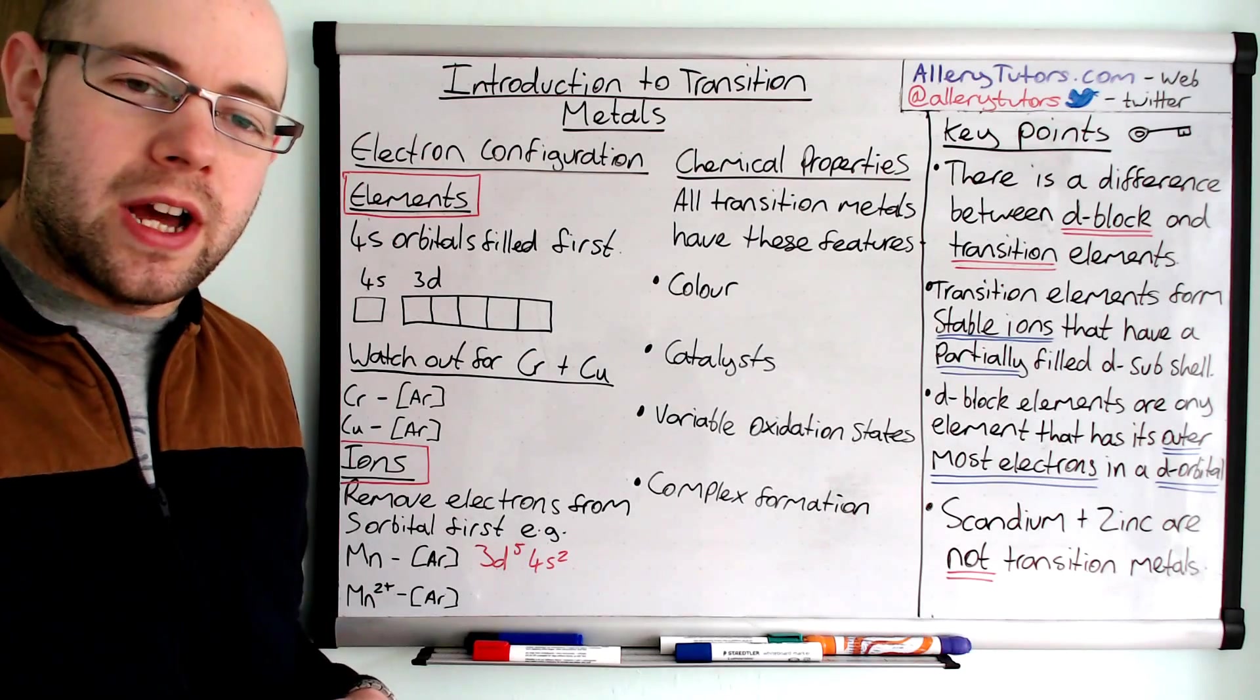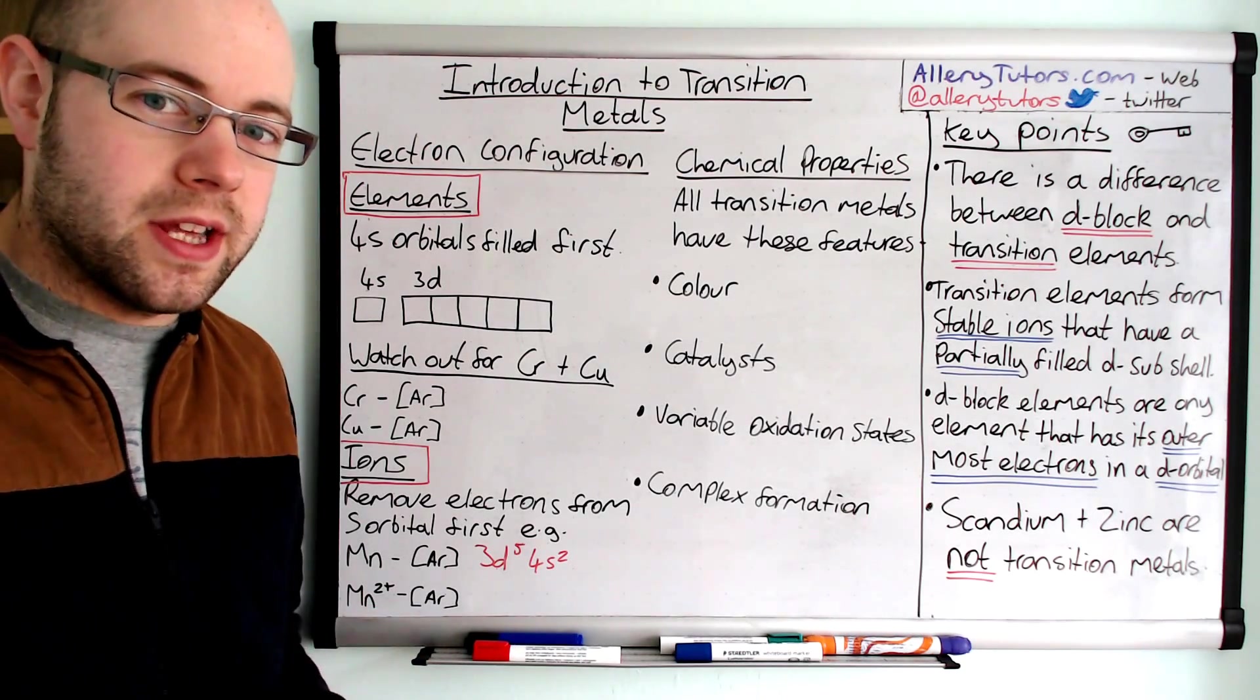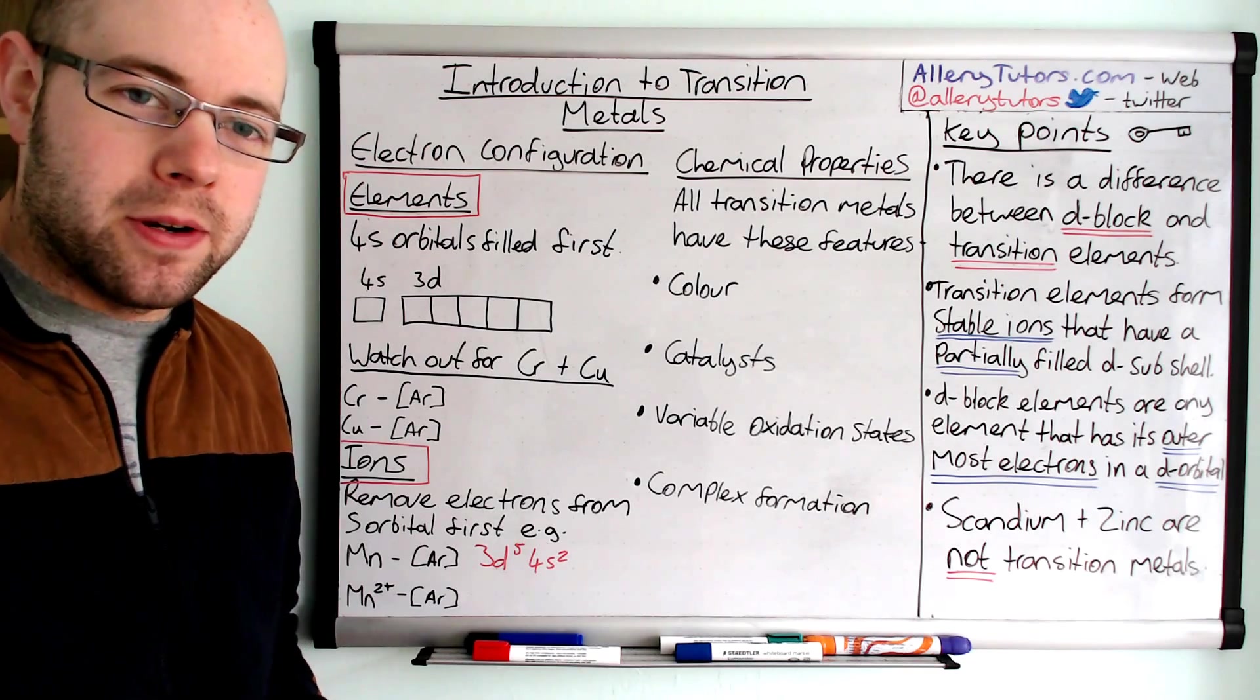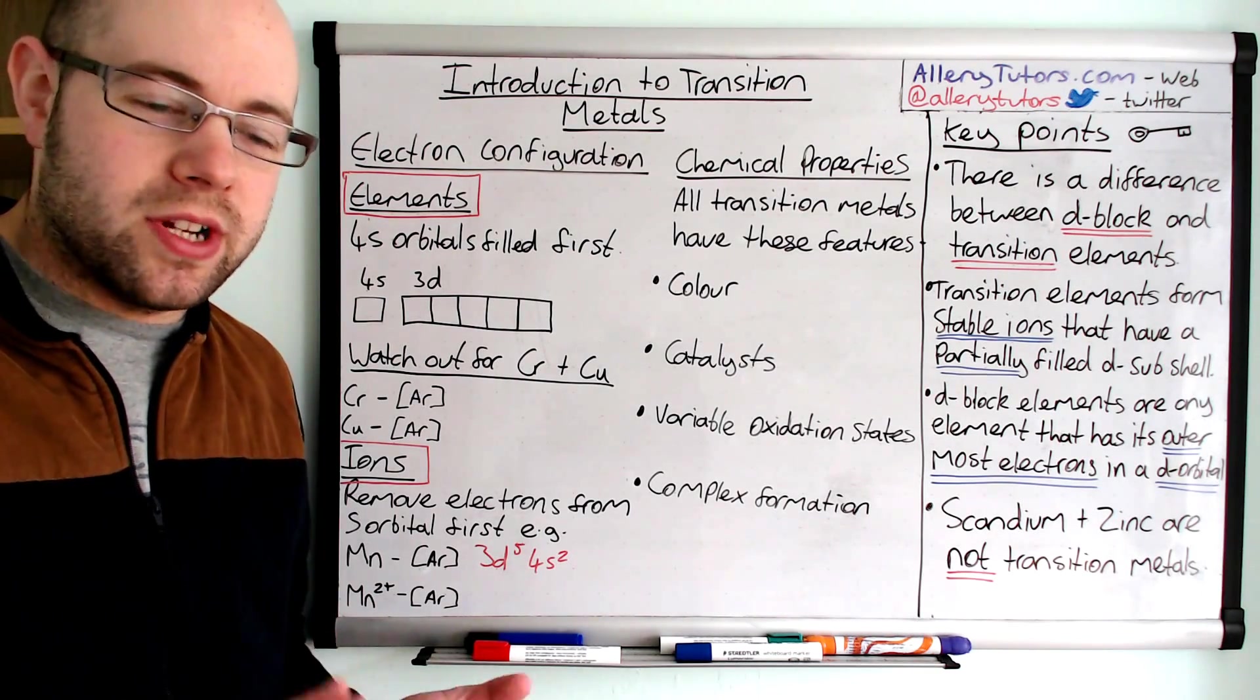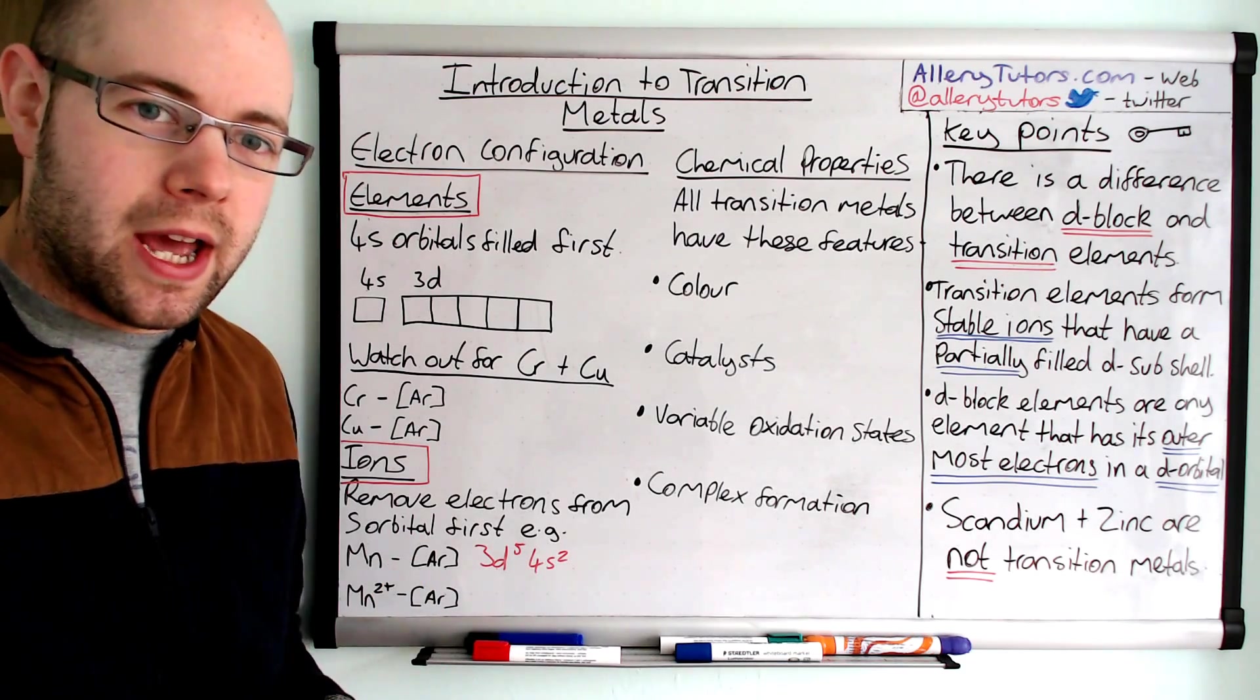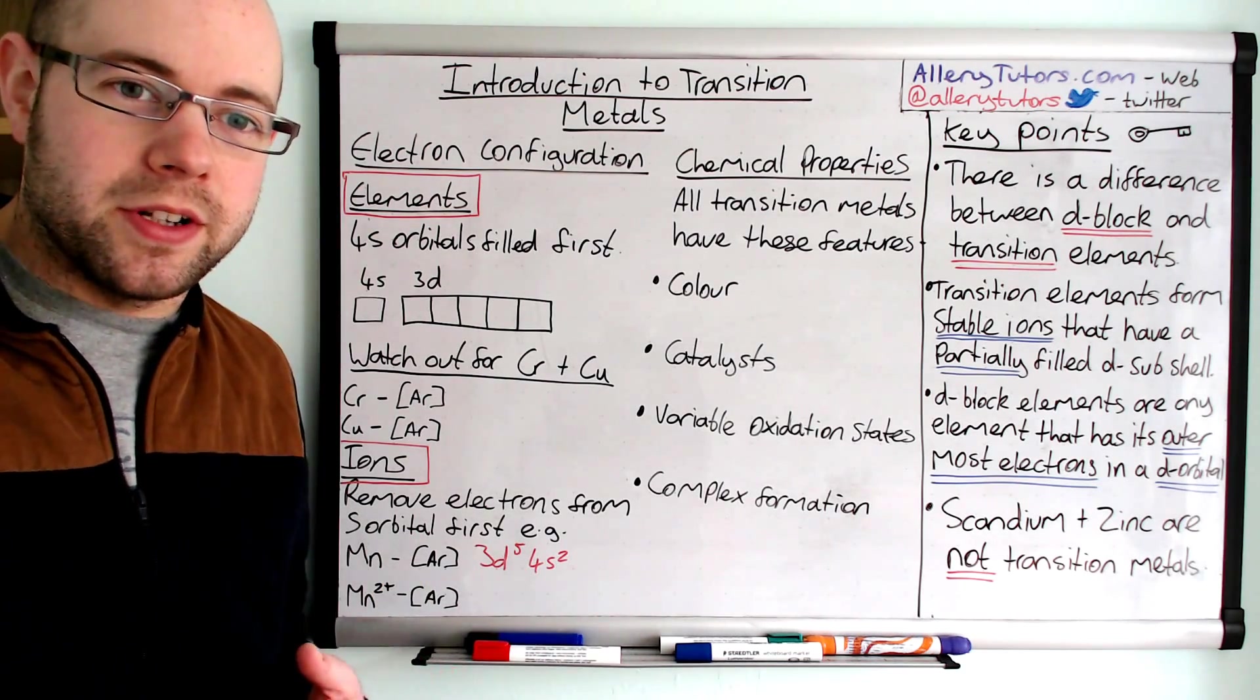We're going to look at electron configuration of the elements and the ions that they form. We're going to look at their chemical properties and we're also going to look at some definitions of a transition metal and a D-block element, because it is important that we need to know the difference between them. And that's where I'm going to start.